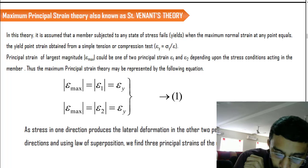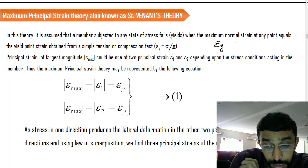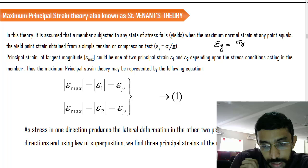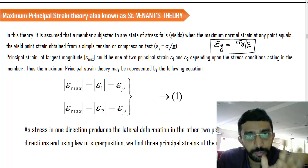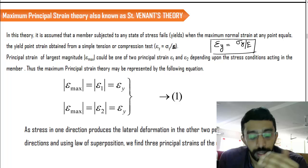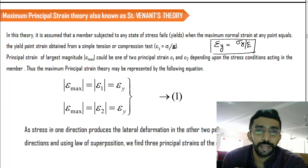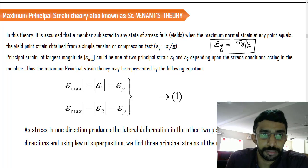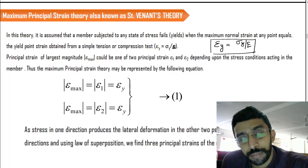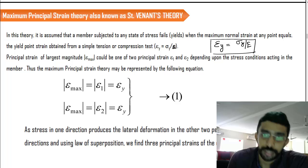The strain at the yield point is yield stress divided by E (Young's modulus). If, by the application of load, the strain goes beyond the value of epsilon_y, we can expect failure to occur there. That is the simplest meaning of the maximum principal strain theory. The question is: how can we calculate the maximum principal strains, and which strains do we consider to do a safe design?